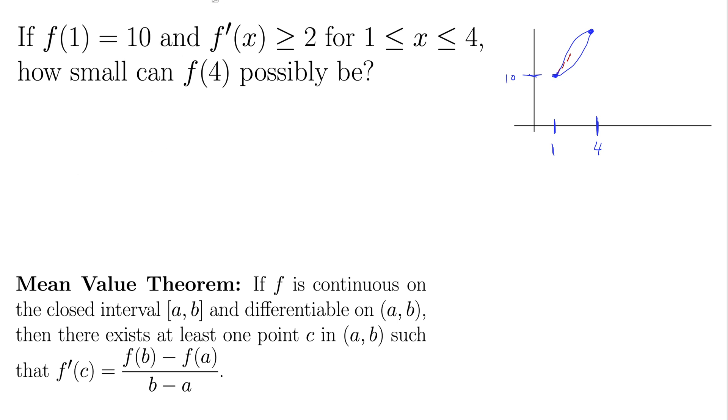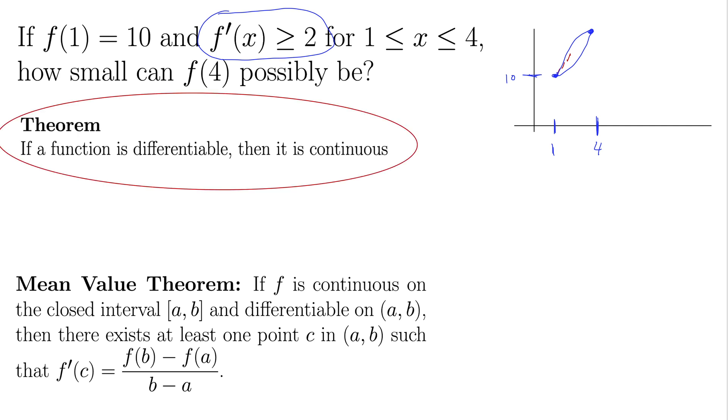So we have if f is continuous on 1 to 4 in our case. Well, I don't know, it doesn't say much about it being continuous up here, but it does say that this derivative exists and is greater than or equal to 2. Recall that when we first talked about differentiability, there was a theorem that says if a function is differentiable, then it is continuous.